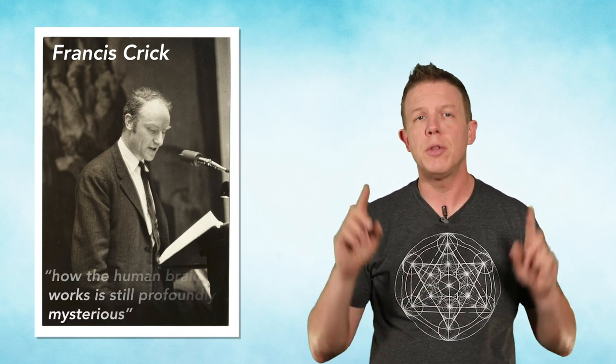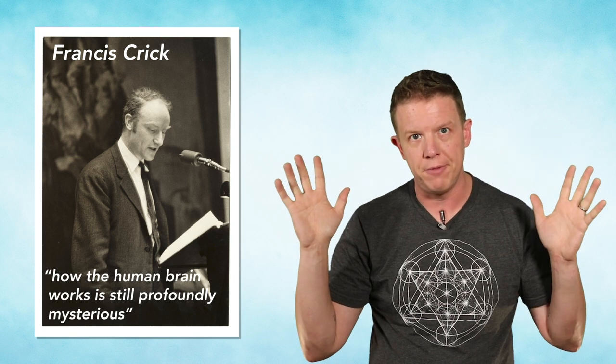In 1979, Francis Crick wrote an essay titled Thinking About the Brain. In it he wrote, in spite of the steady accumulation of detailed knowledge, how the human brain works is still profoundly mysterious.